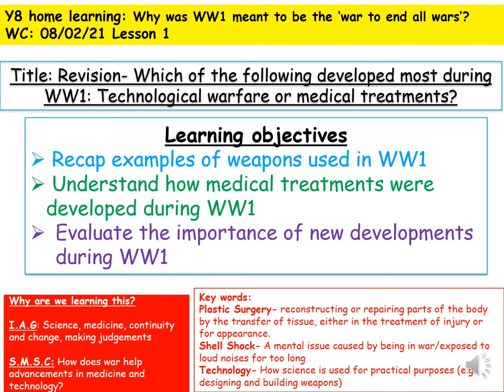For this lesson, first we're going to look at some examples of the kinds of weapons that were used during World War I. Then we're going to look at how medical treatments developed and changed in World War I, before finally evaluating or coming to a decision on the importance of new developments. We're going to work out together why those developments were important and which ones were the most important.